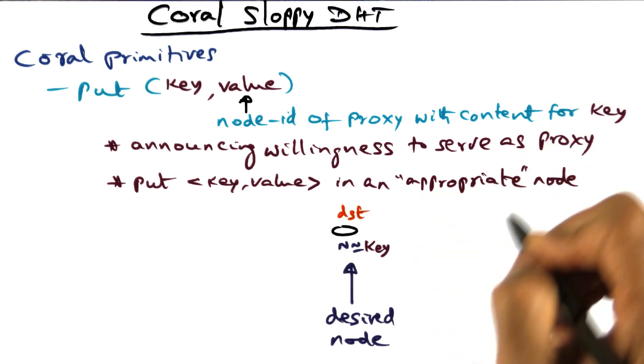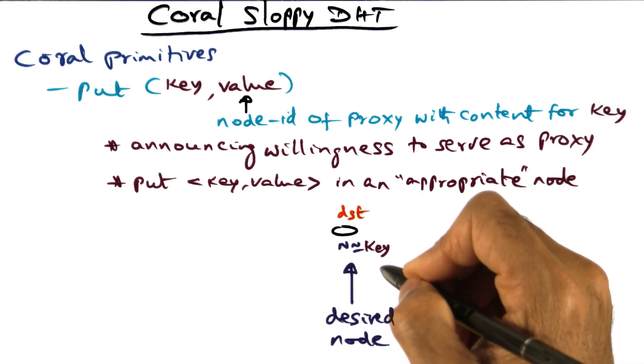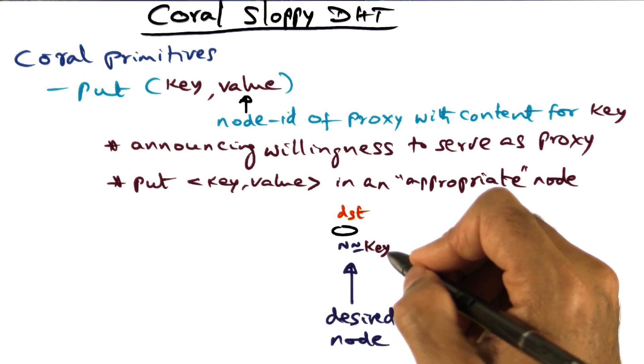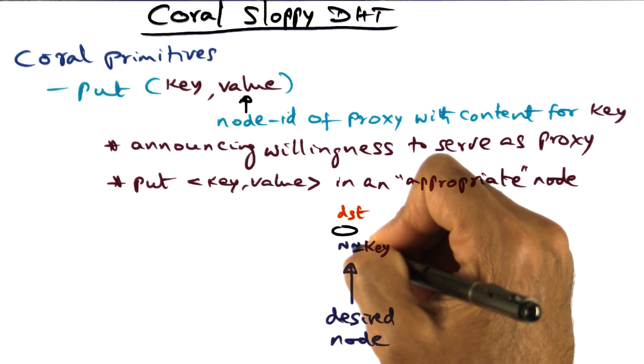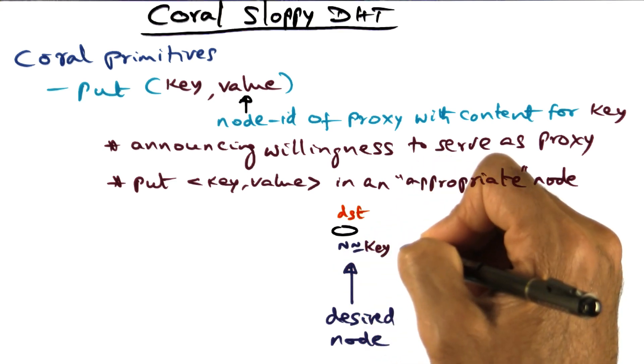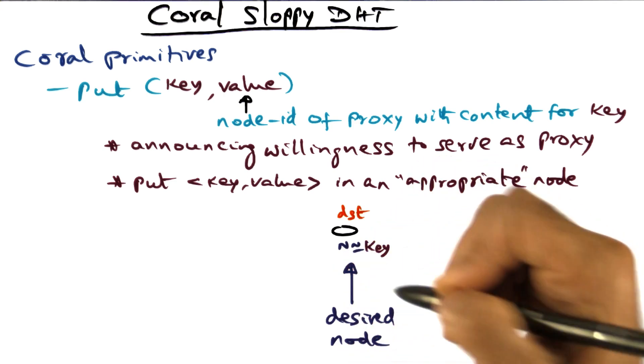Now what do we mean by an appropriate node? Ideally, what we want to do is, given a key, we want to store it in a node ID whose ID is n equal to key. That's the desired node where we want to place it.